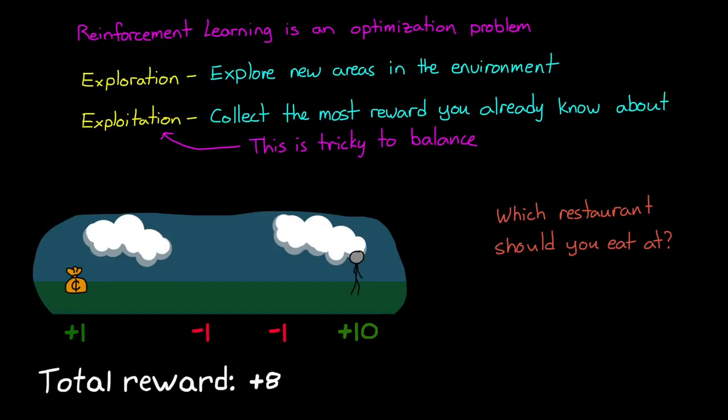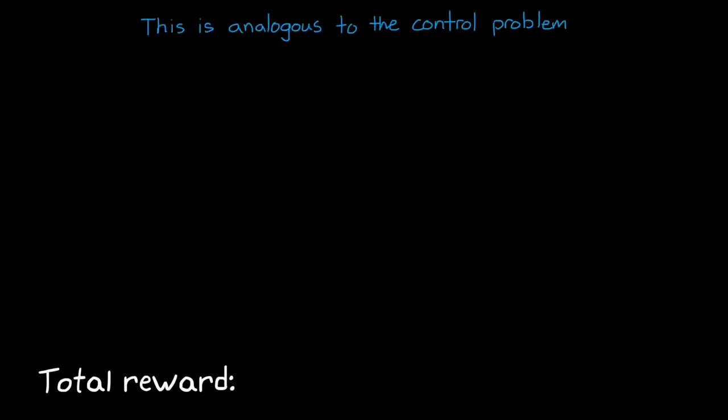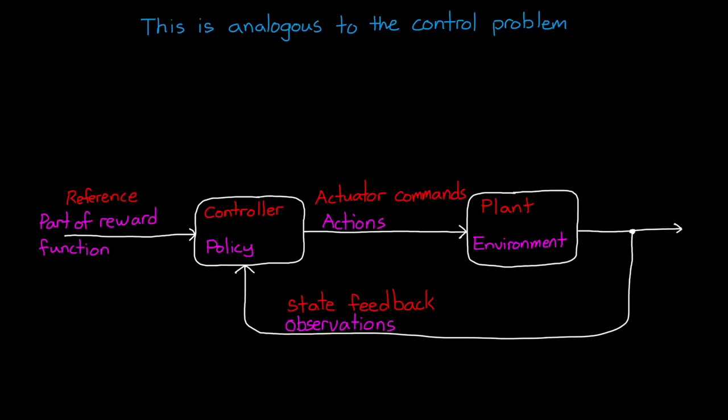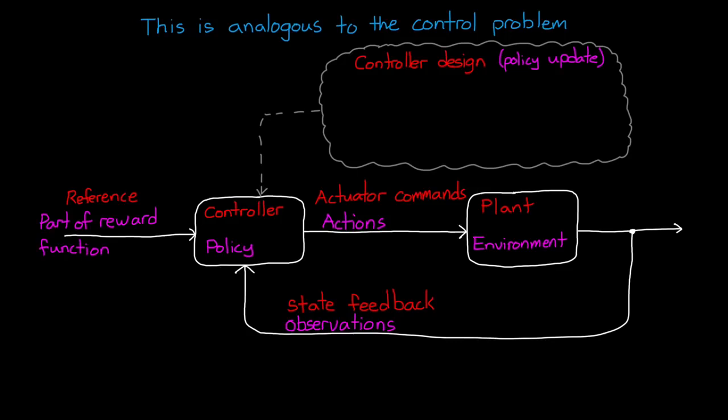Okay, it's starting to feel like RL has a completely different goal than what control engineers are trying to do when we design control systems, but it is pretty much exactly the same problem. We're trying to figure out how to design the controller, or the policy, that maps the observed state of the plant, or the environment, to the best actuator commands, the actions. And when we design a controller, we're basically doing a one-time policy update. And one of the ways that we can design an optimal controller is by minimizing a cost function, like we do with LQR. And cost is just the negative of reward. So by maximizing the reward, we're solving the same problem as minimizing cost.